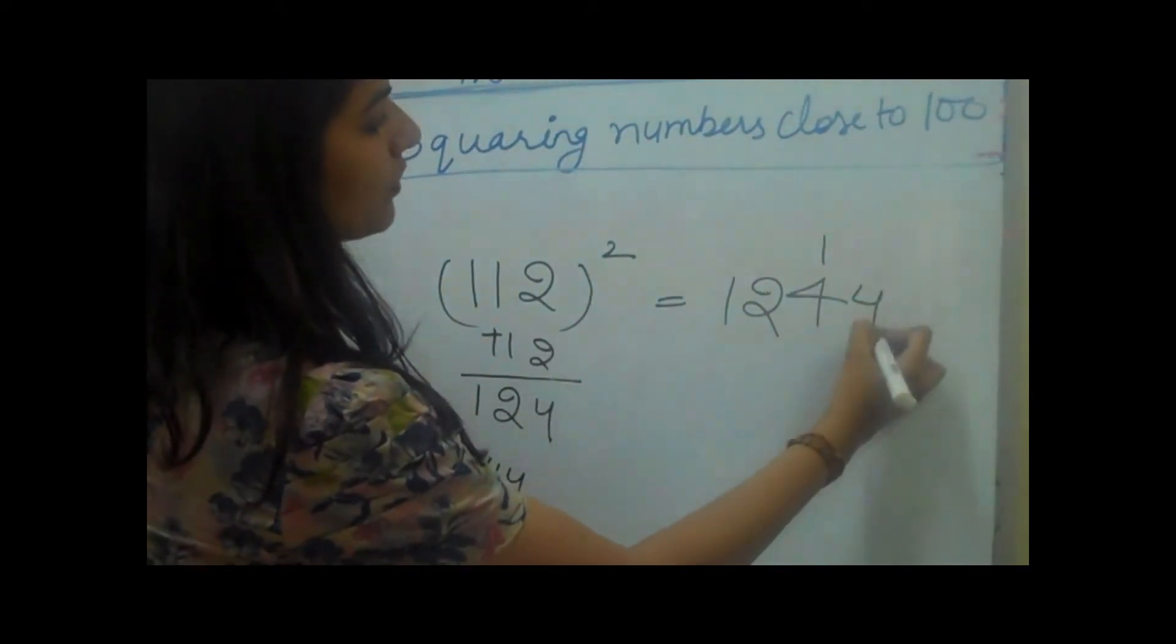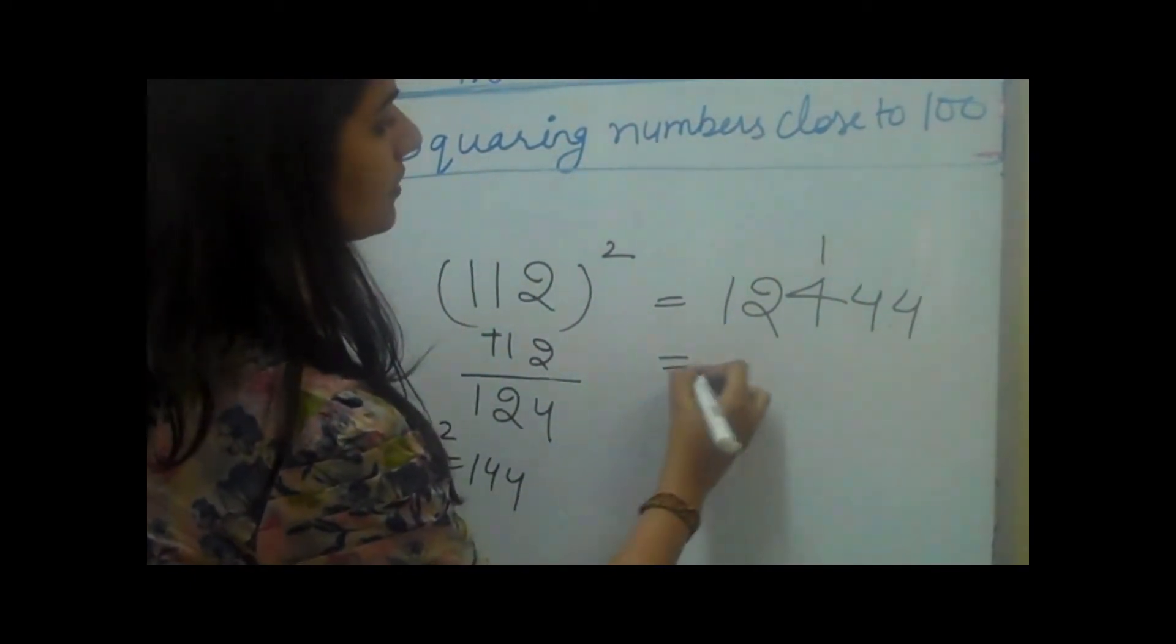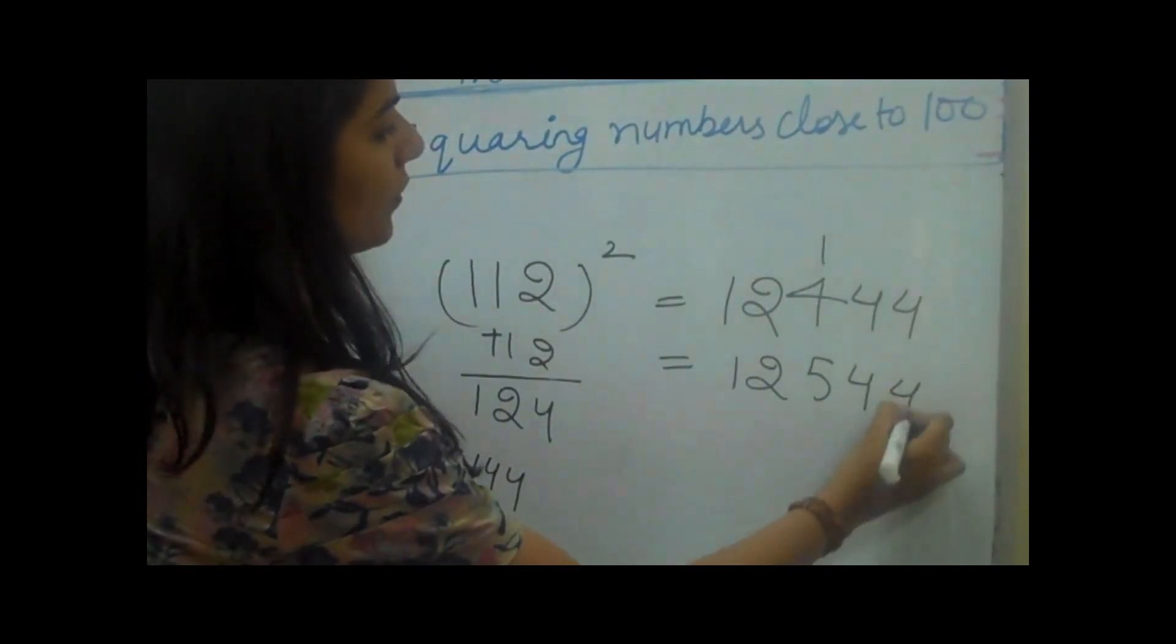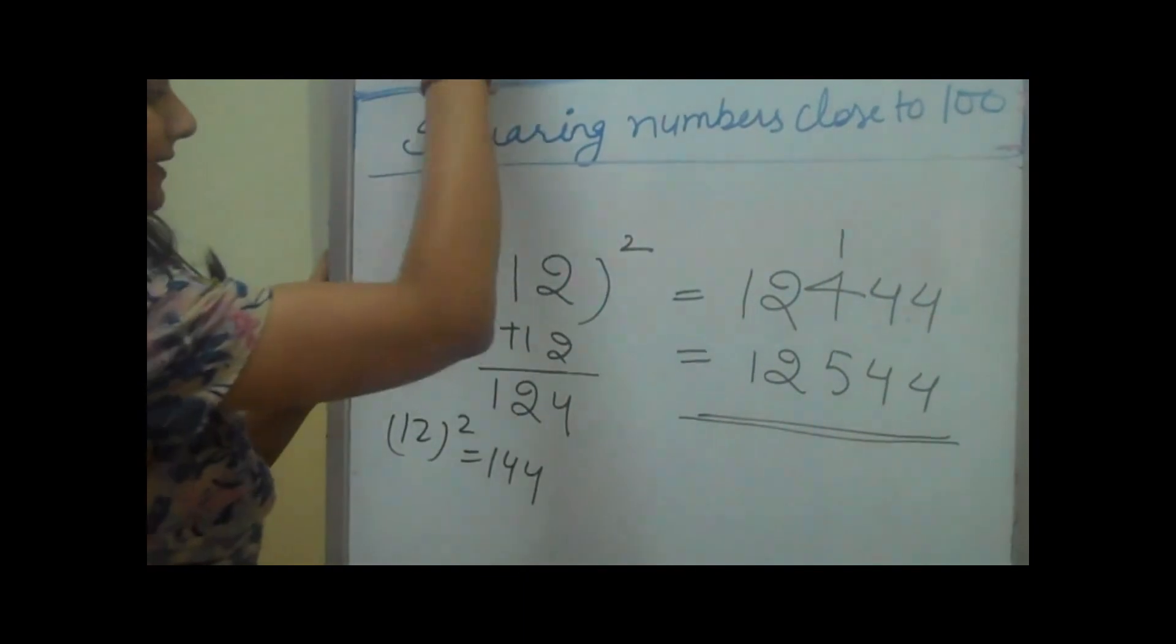Then one carry over, and then we put here. It makes 1, 2, 5, 4, 4 as the answer. Let's take another example.